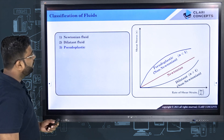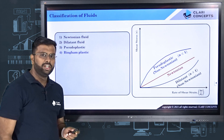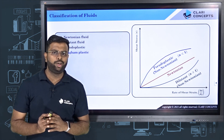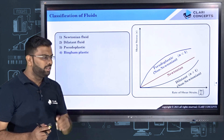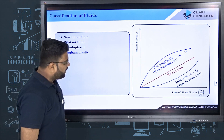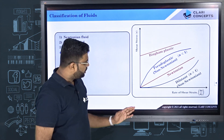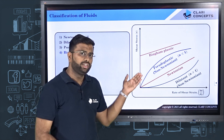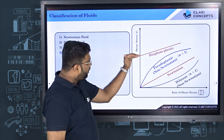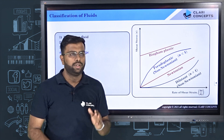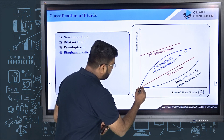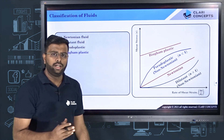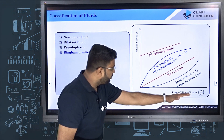Now let us look at Bingham plastic fluids, which we all use regularly. These fluids behave like a solid below a certain threshold value of stress, and above that threshold they behave like a fluid. On the graph, you see a vertical line up to the yield stress, then an inclined line.